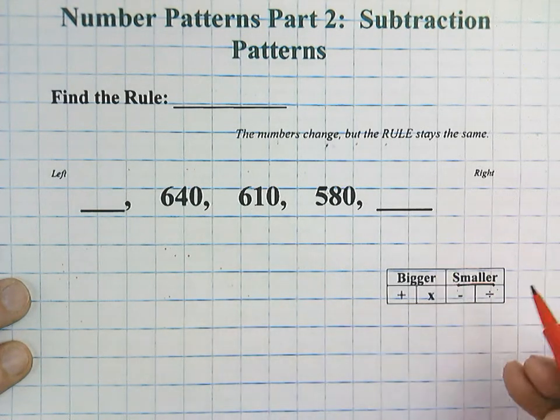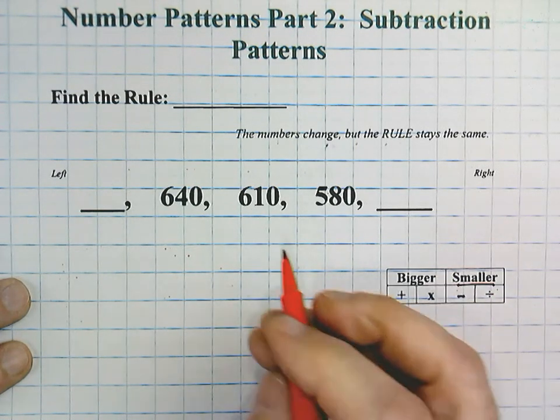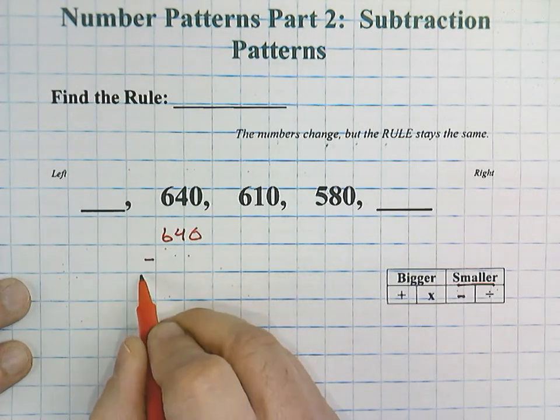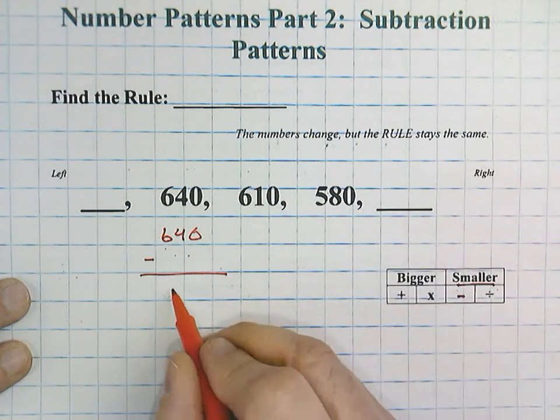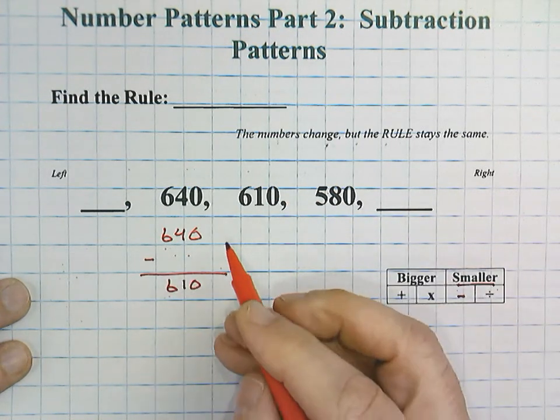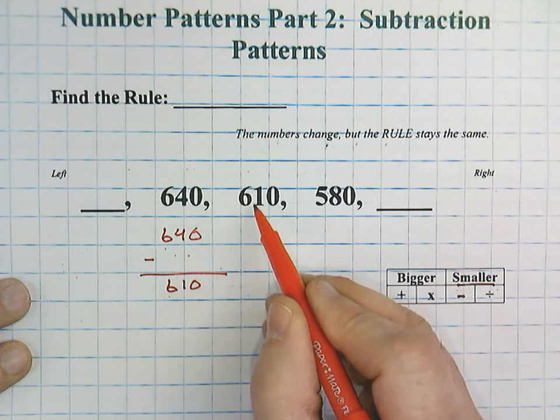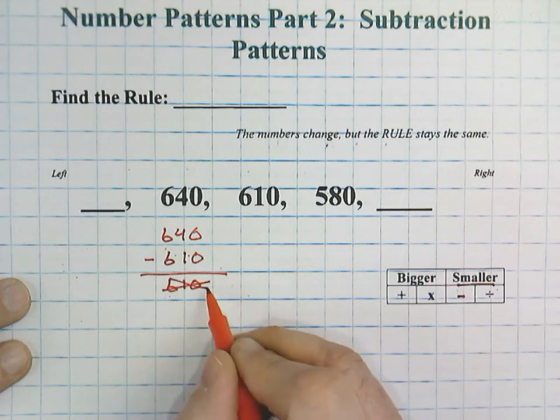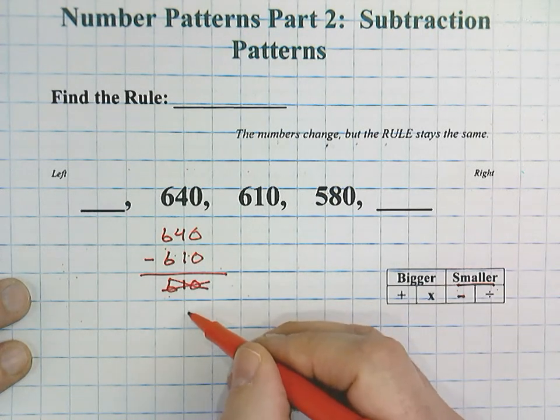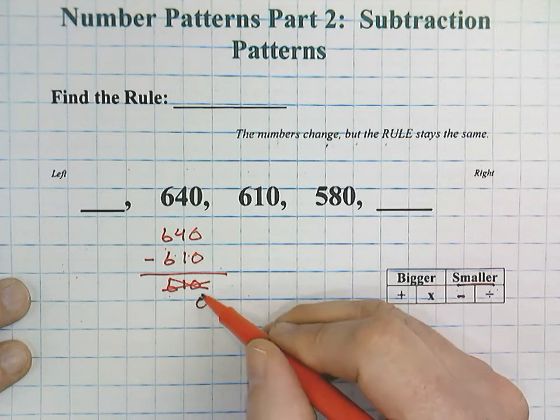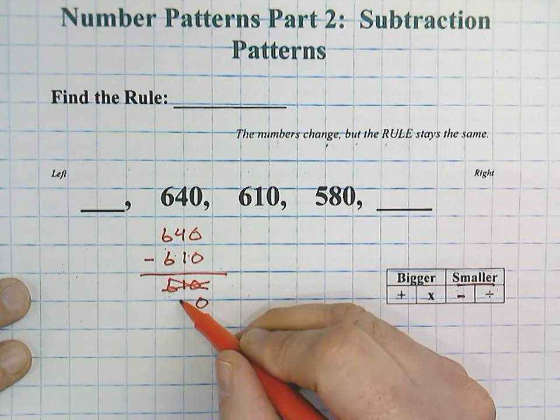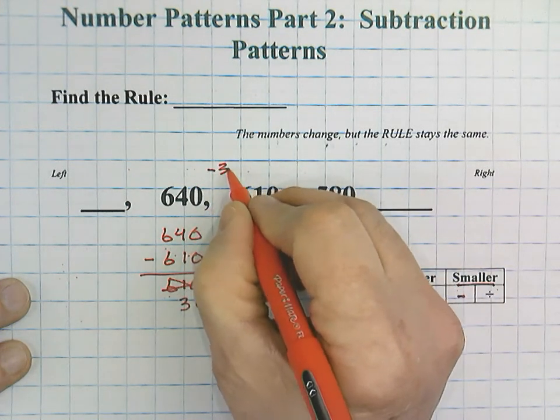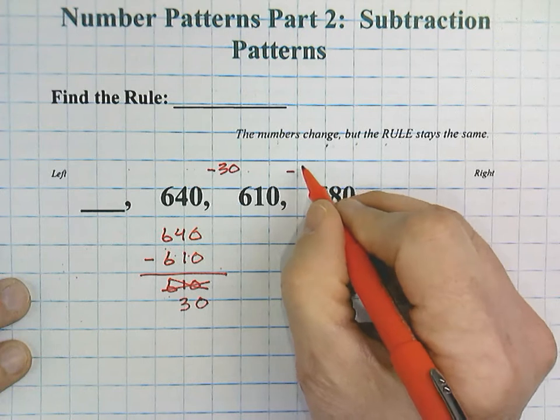I do not believe this will be division. I'm pretty sure this is subtraction. So, we're going to go 640 minus blank would equal 610. Because of fact families, we can switch the 610 to this and be able to use the number that we get here. 0 minus 0 is 0. 4 take away 1 is 3. And then 6 take away 6 is nothing. So, what we have here is a minus 30 rule.